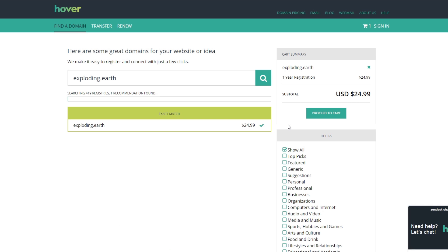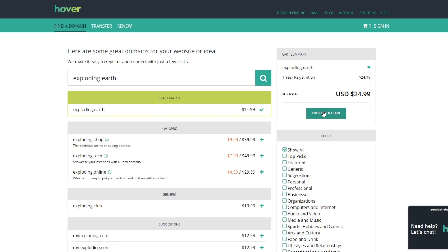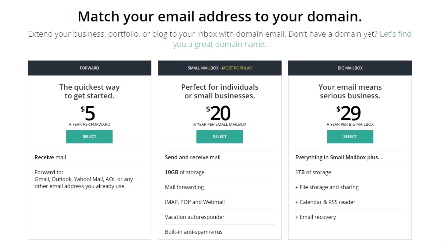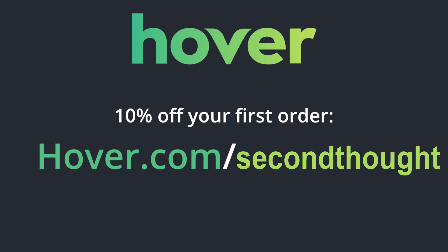Hover makes it easy to buy all kinds of custom domains with fun extensions like .earth or .space. But here's the best part. Even if you don't need a website, you can just set up a custom email account. With an exploding .earth email address, the rest of the world will have to take you seriously. For award-winning customer support and over 400 domain extensions to choose from, make sure to visit hover.com slash secondthought and save 10% on your diabolical new domain and email address.